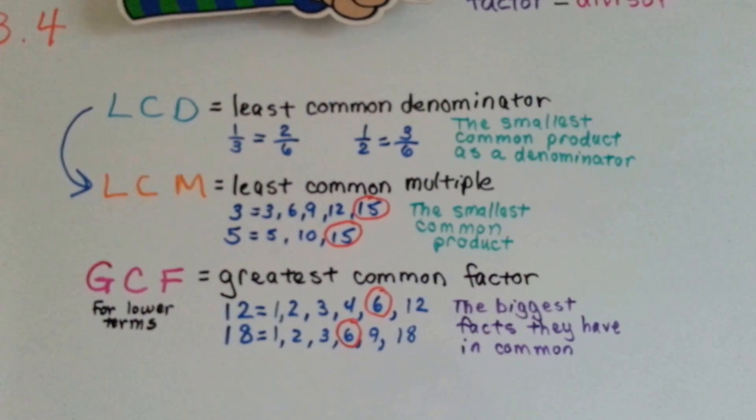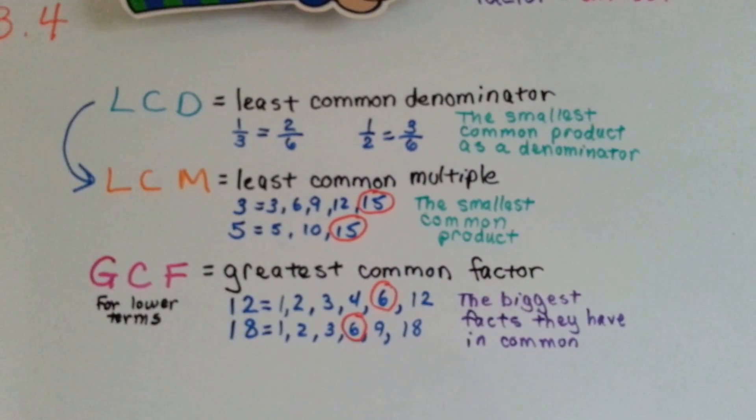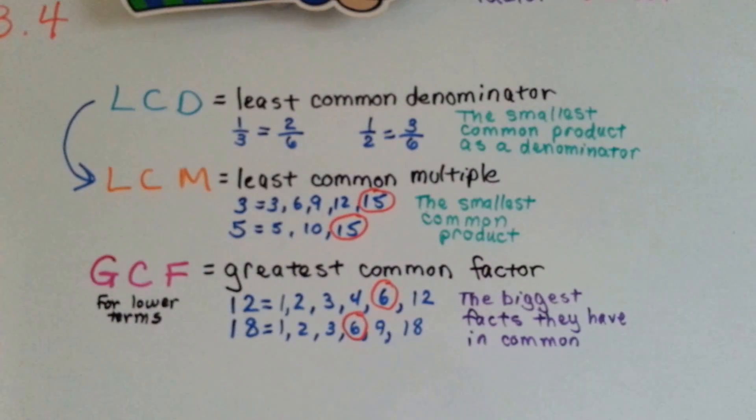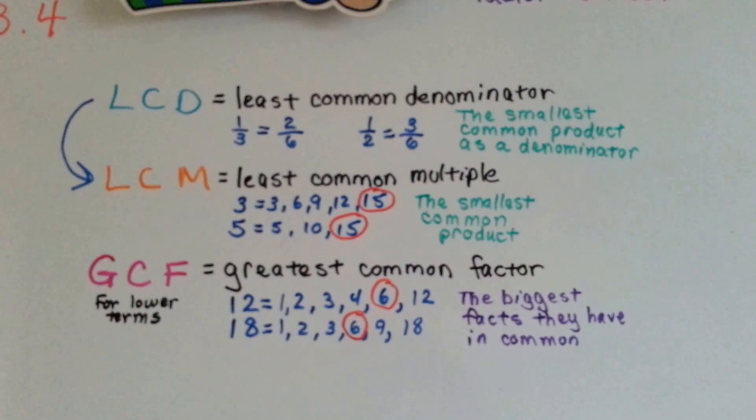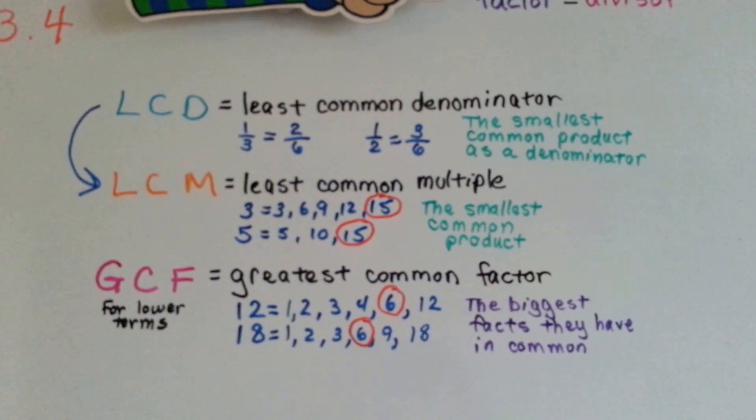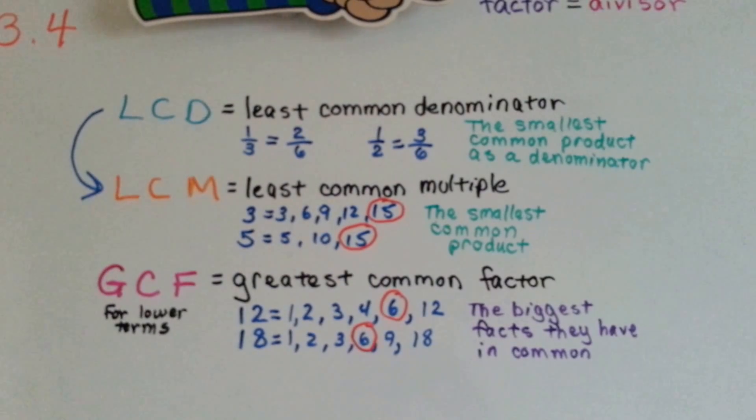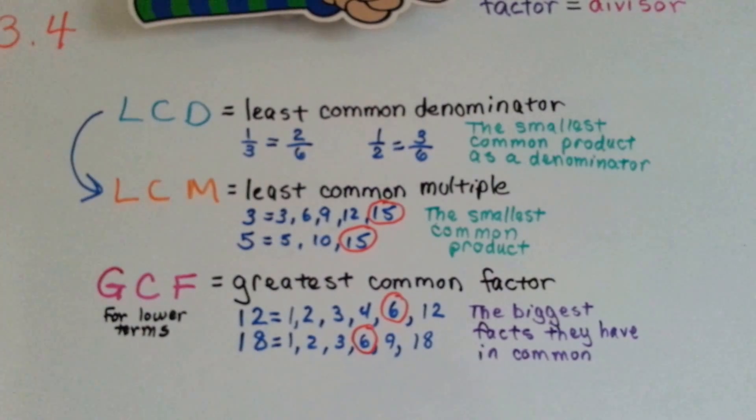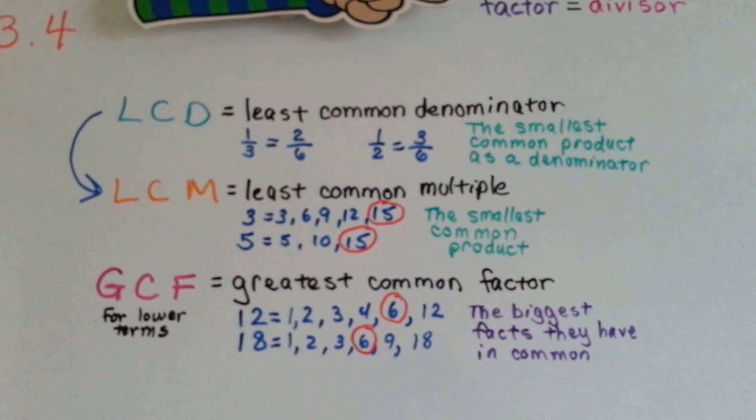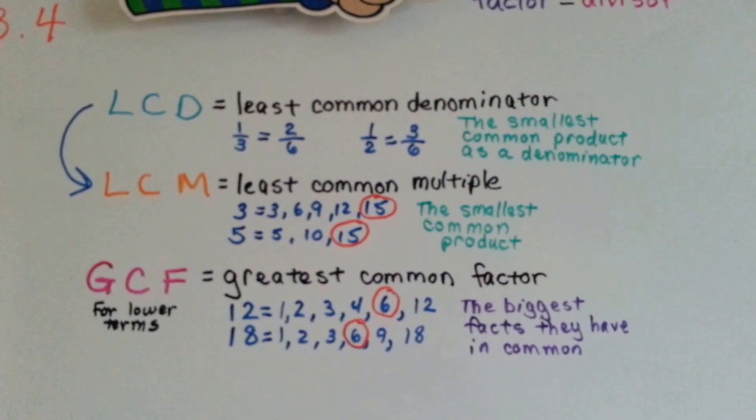It's really the same thing as the LCM, the least common multiple. The least common multiple is the smallest common product between two numbers. 3 and 5, if we list their products, we have 3, 6, 9, 12, and 15 for the 3. And for the 5, the products are 5, 10, 15. So 15 would be the smallest common product they have between them. That's the least common multiple. It could also be a common denominator if we wanted to use it as a denominator. So remember that LCD and LCM are really the same thing. They're the common product. It's just the lowest common product and the top one is being used as a denominator.